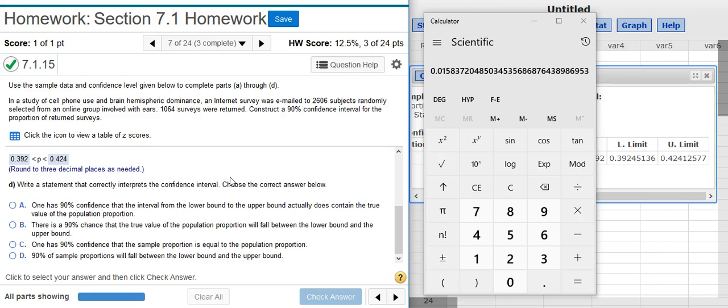Here our confidence level is 90%. So we're 90% confident that the true value of the population proportion is between these two values here.